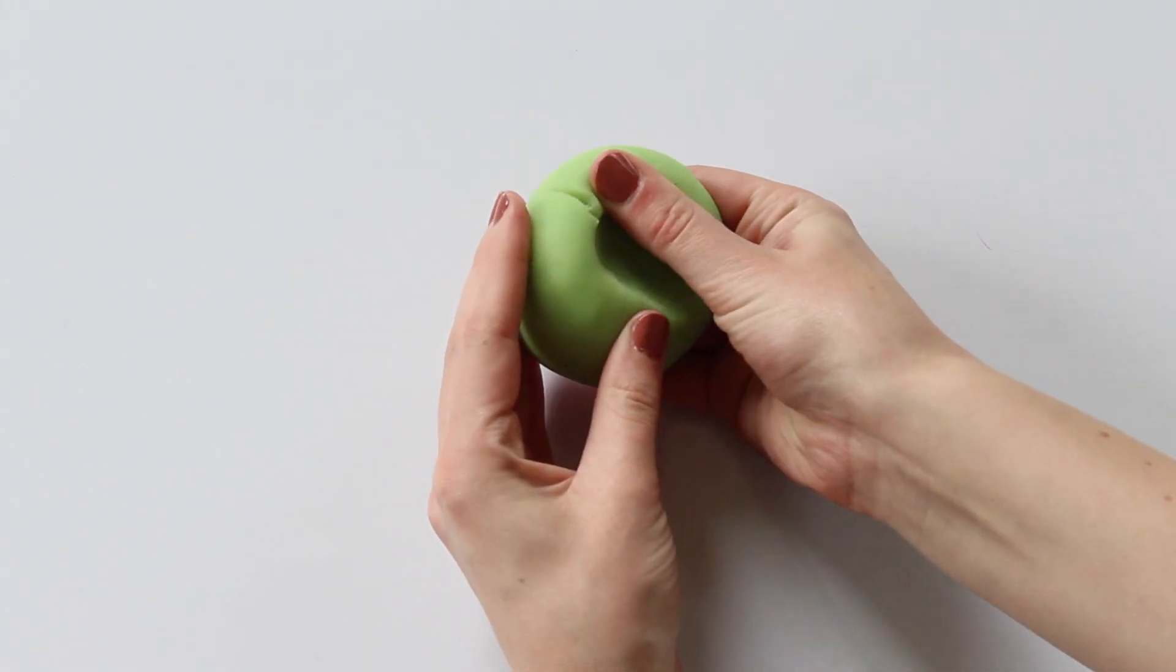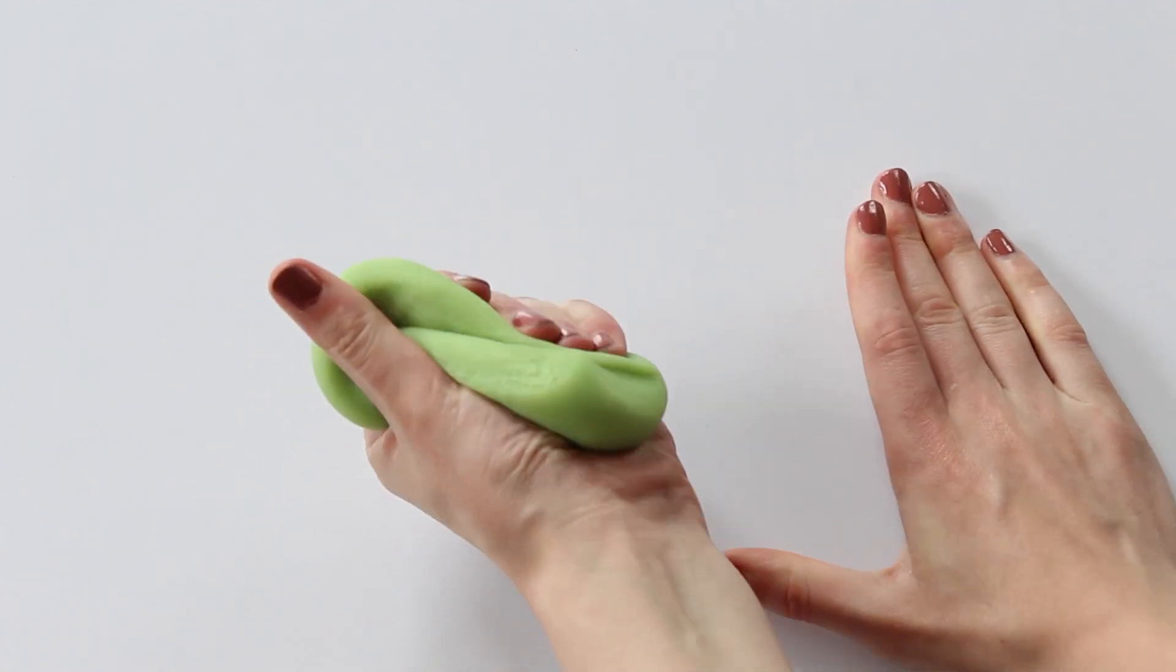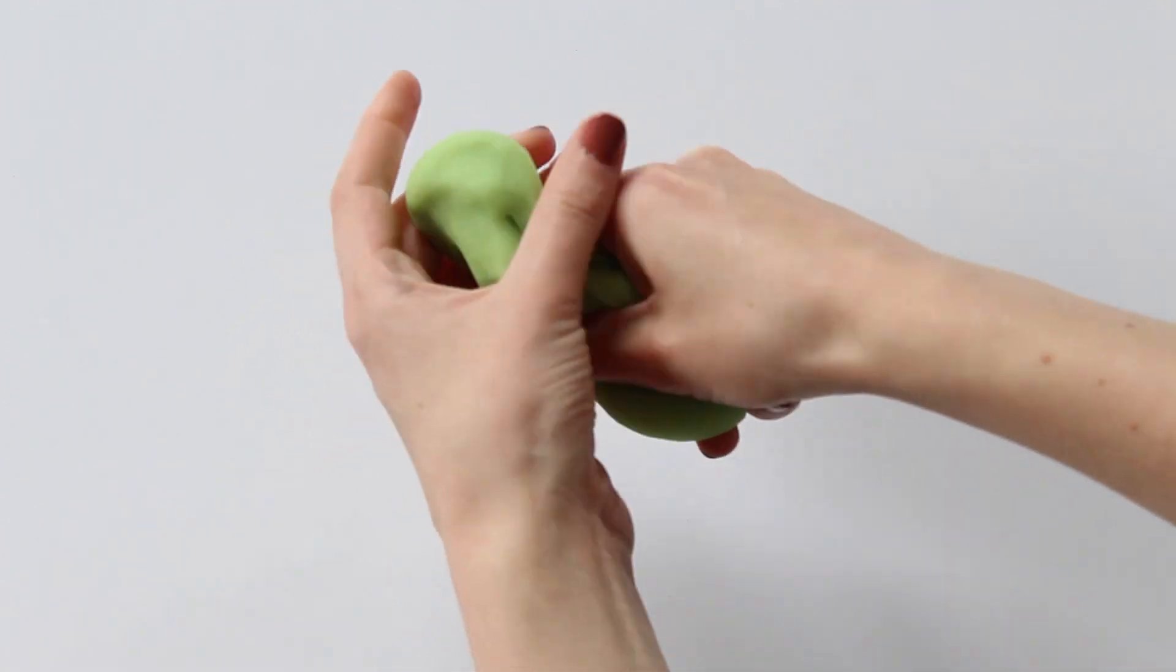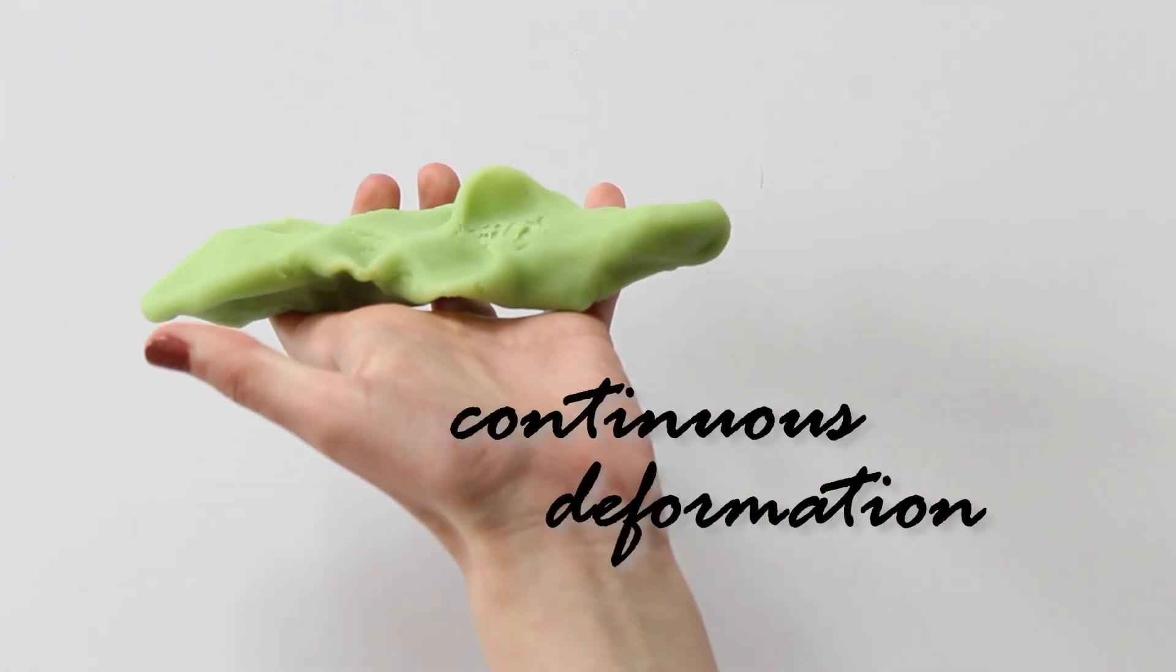Imagine that I have a sphere made out of play-doh. I can squish it and stretch it in any which way. In topology, a field of math, we call this squishing and stretching continuous deformation.